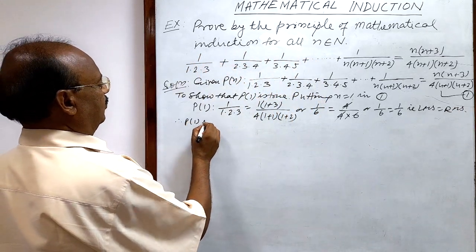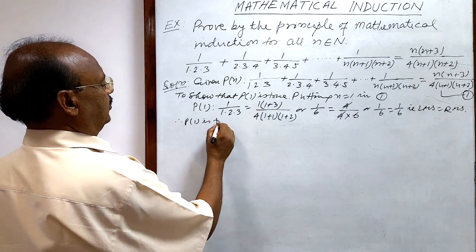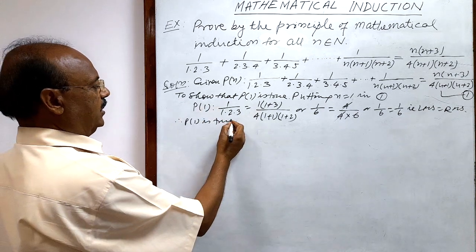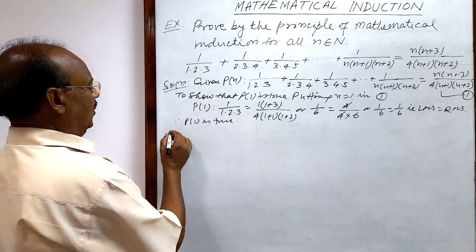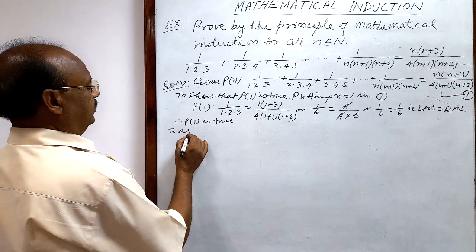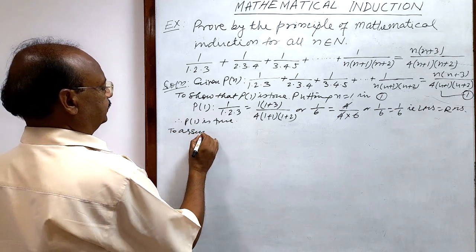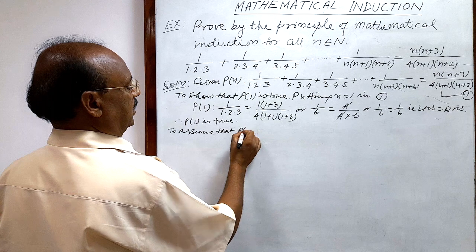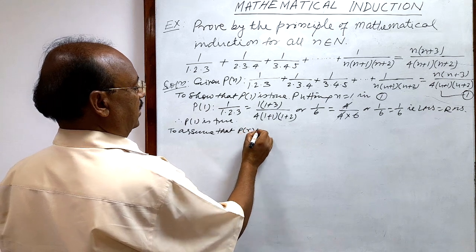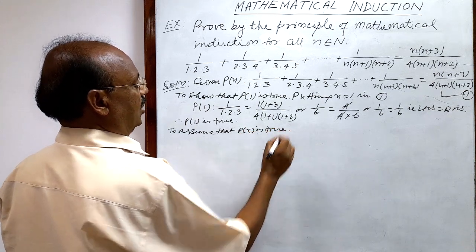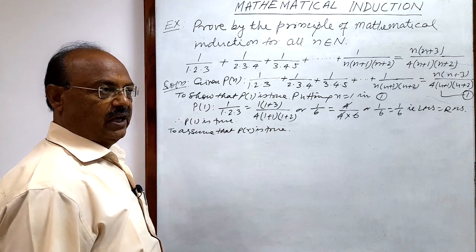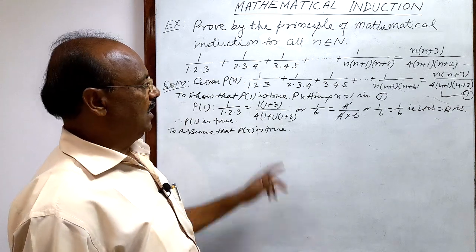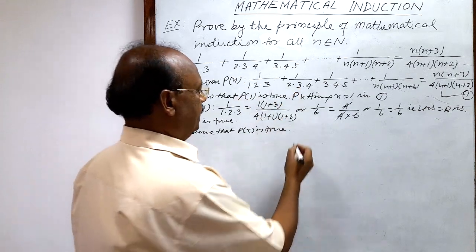Therefore P(1) is true. This completes the first step. In the second step, we assume that P(r) is true. We get P(r) by putting n = r in relation number 1.